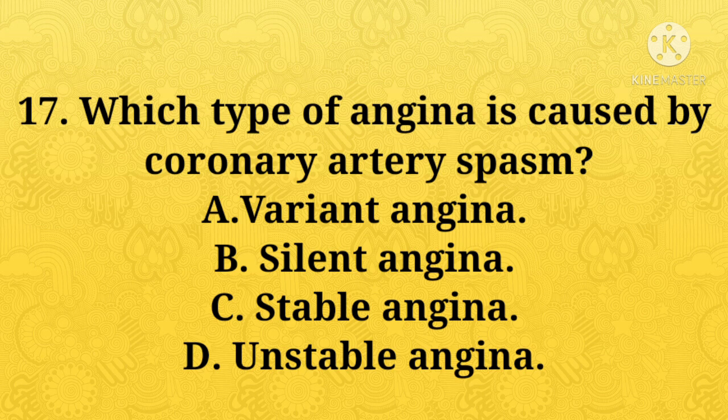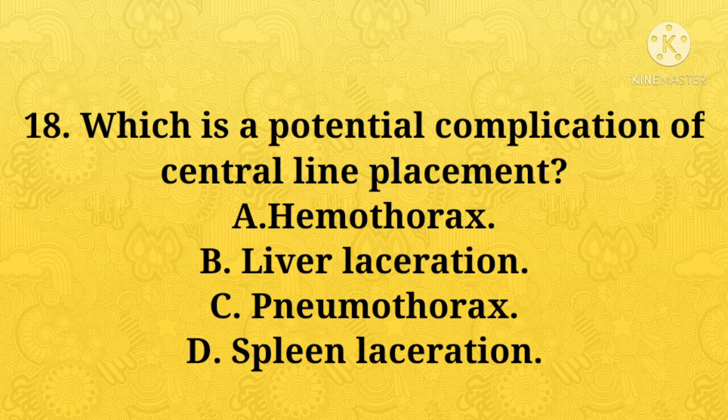Which type of angina is caused by coronary artery spasm? A: variant angina, B: silent angina, C: stable angina, D: unstable angina. Option A, variant angina, is the right answer. Which is a potential complication of central line placement? A: hemothorax, B: liver laceration, C: pneumothorax, D: spleen laceration. Option C, pneumothorax, is the right answer.